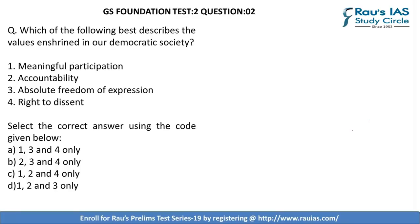Question 2 is asking: which of the following best describes the values enshrined in a democratic society? This question is more understanding-based rather than factual. If our basics about Indian democracy are clear, we will be able to attempt it. The first is meaningful participation — one of the features of democracy in India is universal adult franchise, meaning all people above the age of 18 are given the right to vote. Since democracy is a government by the people, it is essential that citizens participate in the election process.